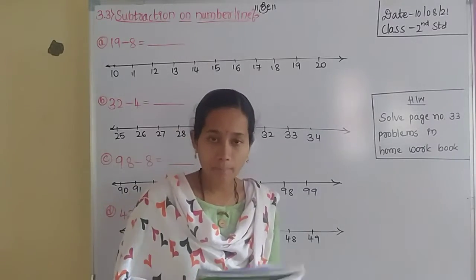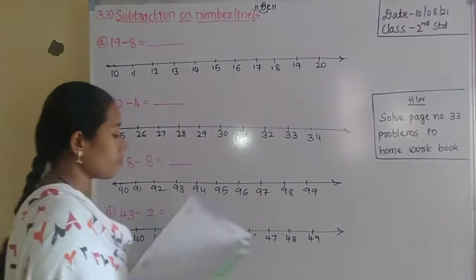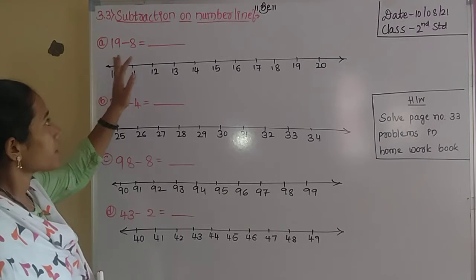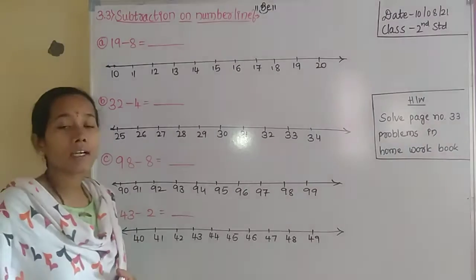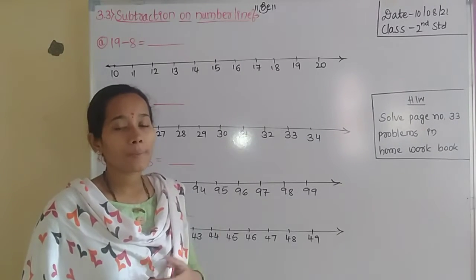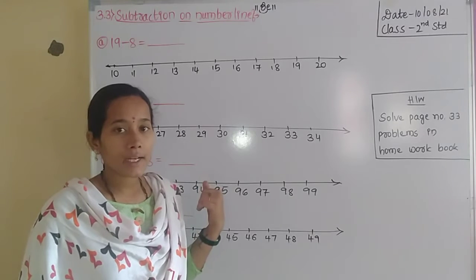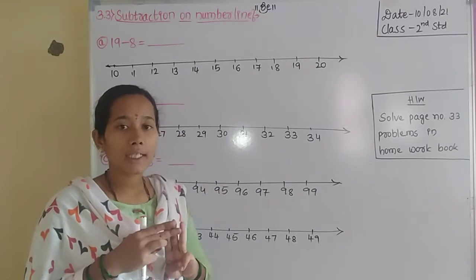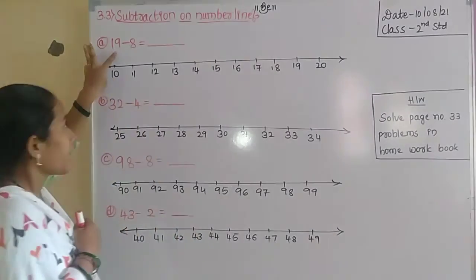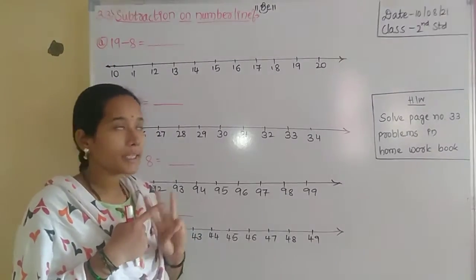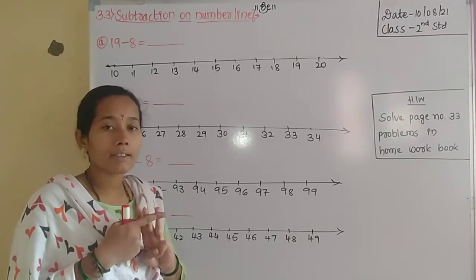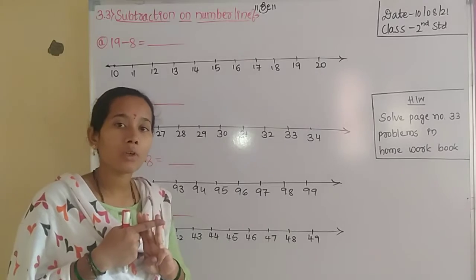Open your textbook to page number 33. The first problem is 19 minus 8 equals dash. What are the terms of subtraction? In the previous class we discussed the terms and concepts of subtraction. There are three main terms: the first term is called the minuend, the second one is the subtrahend, and the answer we get from the subtraction operation is called the difference.